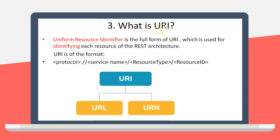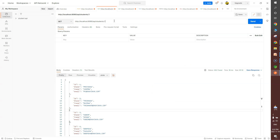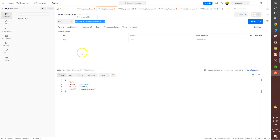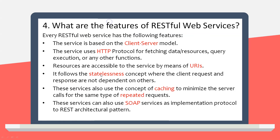Next question: what is a URI? URI stands for Uniform Resource Identifier, which is used for identifying each resource of the REST architecture. The format includes your protocol like HTTP or HTTPS, your service name, resource type, and the ID. For example, this endpoint here is the URI. It has the protocol — HTTP on localhost, HTTPS in production — then the server name, resource type (students), and the ID.